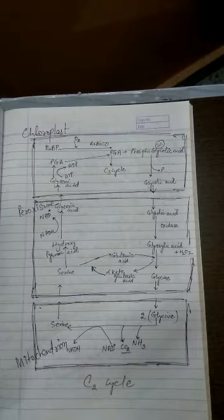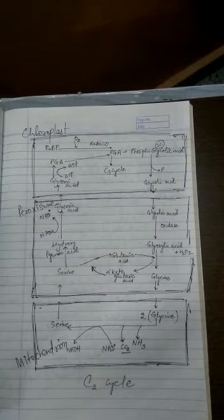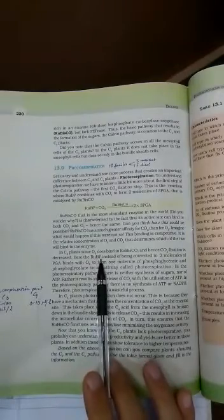This process is described in the NCERT as a wasteful process. According to NCERT, in C3 plants, some oxygen binds to RuBisCO, decreasing carbon dioxide fixation. Instead of RuBP being converted into two molecules of PGA, RuBP binds with oxygen to form one molecule of phosphoglyceric acid and one molecule of phosphoglycolic acid — a pathway called photorespiration. In this pathway, there is no synthesis of sugar and no synthesis of ATP.